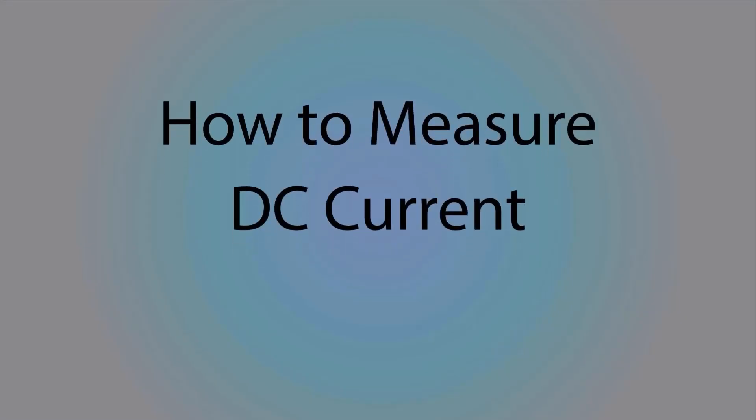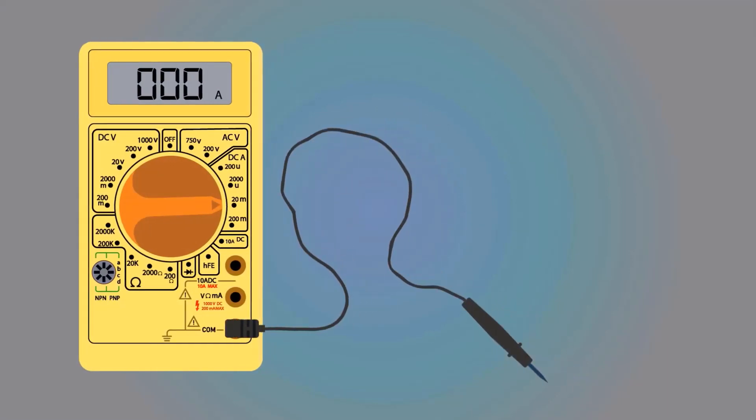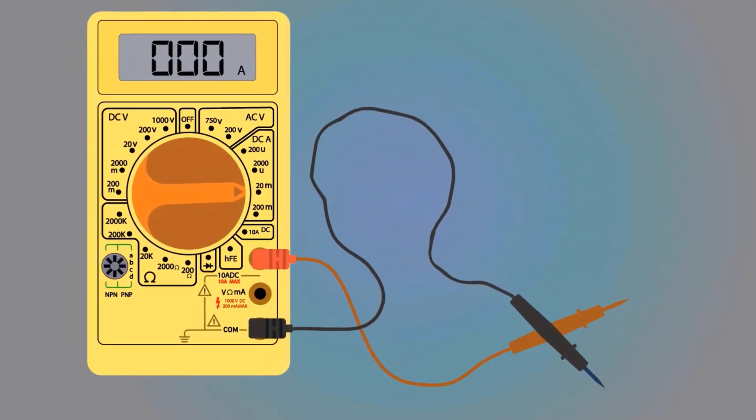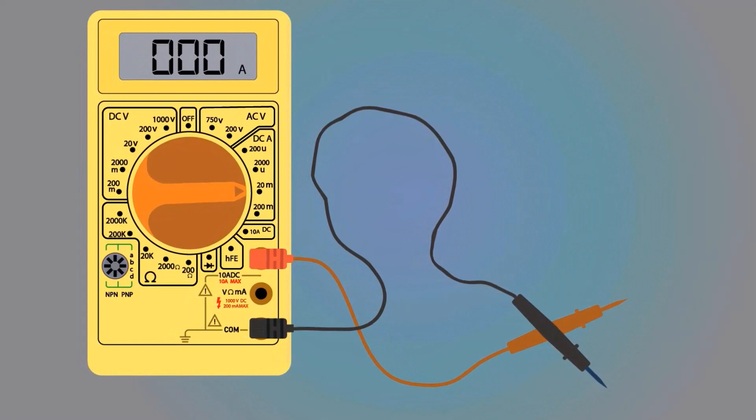How to measure DC current with a multimeter? Take a multimeter. Always connect the black wire of the multimeter to here. Connect the red wire of the multimeter to here, not to here.